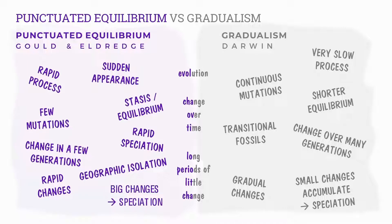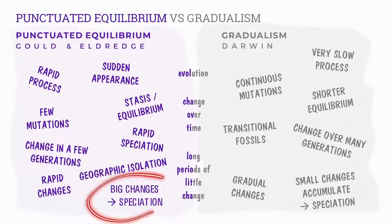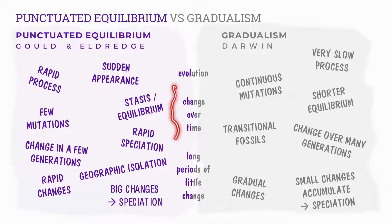Comparing punctuated equilibrium and gradualism: punctuated equilibrium involves a rapid process with sudden appearance of species, a longer stasis period, rapid speciation including geographic isolation, and big changes causing speciation over a few generations. Gradualism is very slow, includes transitional fossils, a shorter equilibrium period, and small accumulated changes over many generations. Similarities include that both are evolutionary processes, both involve change over time, and both include long periods of little change.